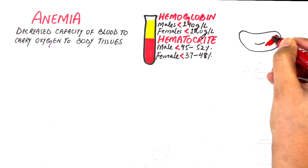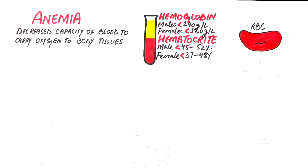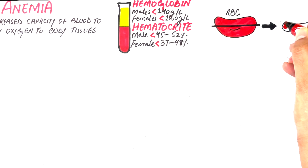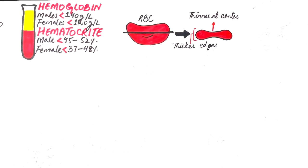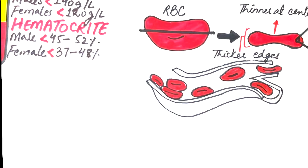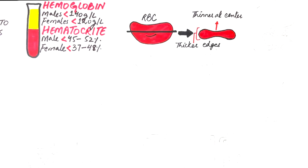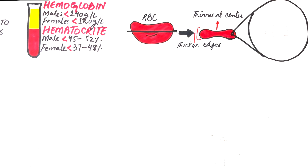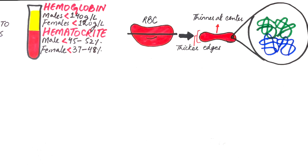Before proceeding with anemia, let's describe a few points on red blood cells. Red blood cells are biconcave in shape, as can be observed in a cross-sectional view of the cell. The red blood cells are thinner at the center while thicker at the edges, making it easier for them to squeeze through a small blood capillary lumen. Red blood cells have a life cycle of 120 days. Within each red blood cell we have millions of hemoglobin molecules. A single hemoglobin molecule is composed of four peptide chains, which differ in different types of hemoglobin.